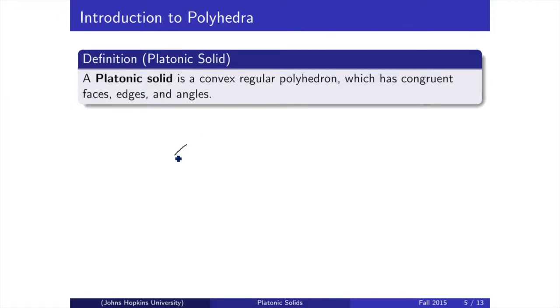Platonic solids are a special class of polyhedra that satisfy all our previous definitions. What makes a platonic solid unique is that its faces, edges, and corresponding angles are all congruent. So basically, it's a very nice, structured polyhedron.